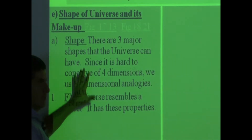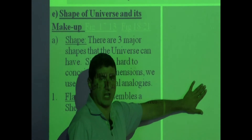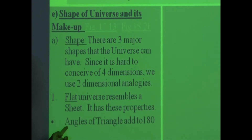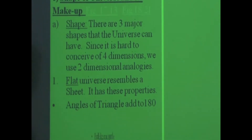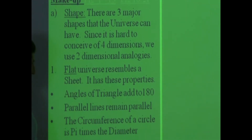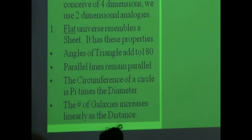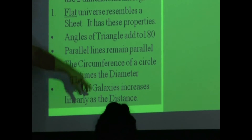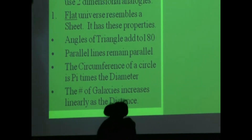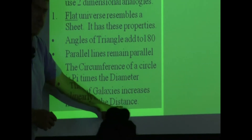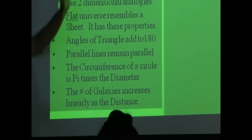A two-dimensional flat space will be like flat projectors — just flat. It has the properties shown on that page: angles of triangle add to 180, parallel lines remain parallel, the circumference of a circle is pi times the diameter. The number of galaxies increases linearly as the distance — I'm going to show you what that means on that picture again when we go back there.